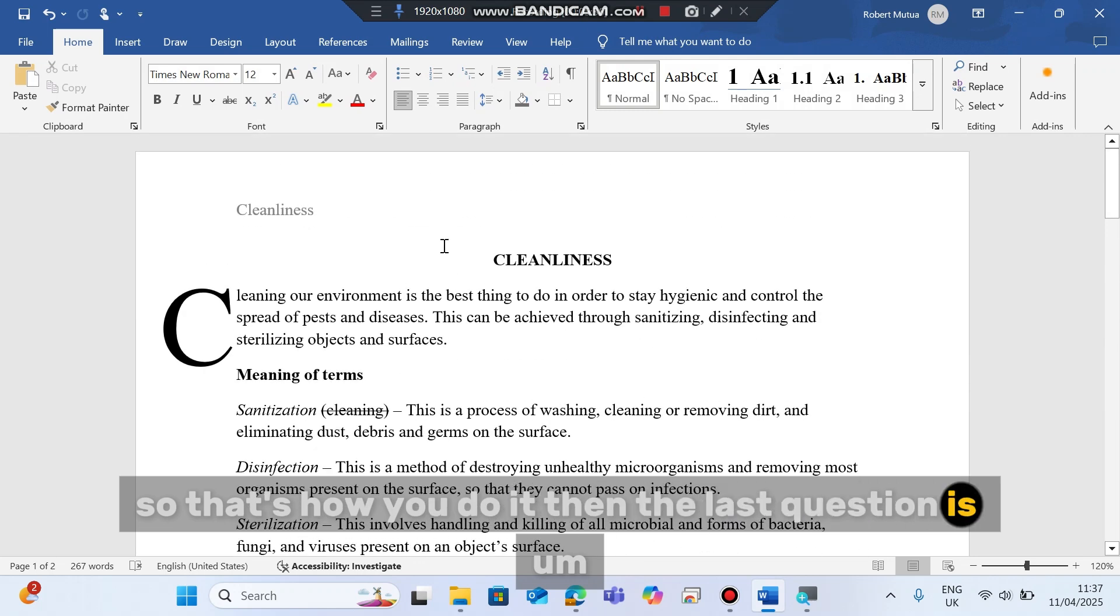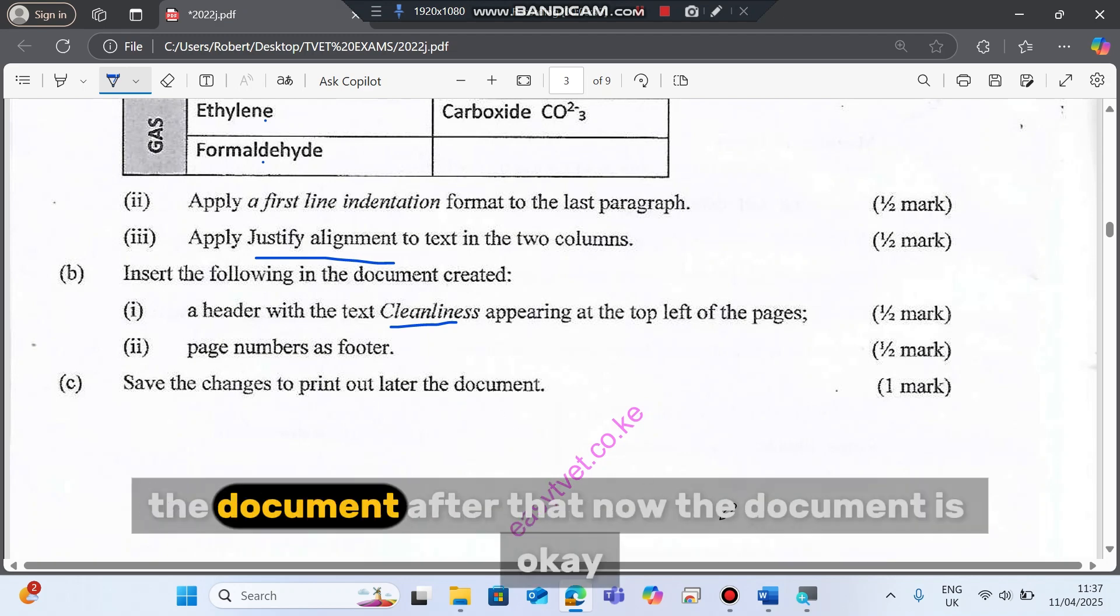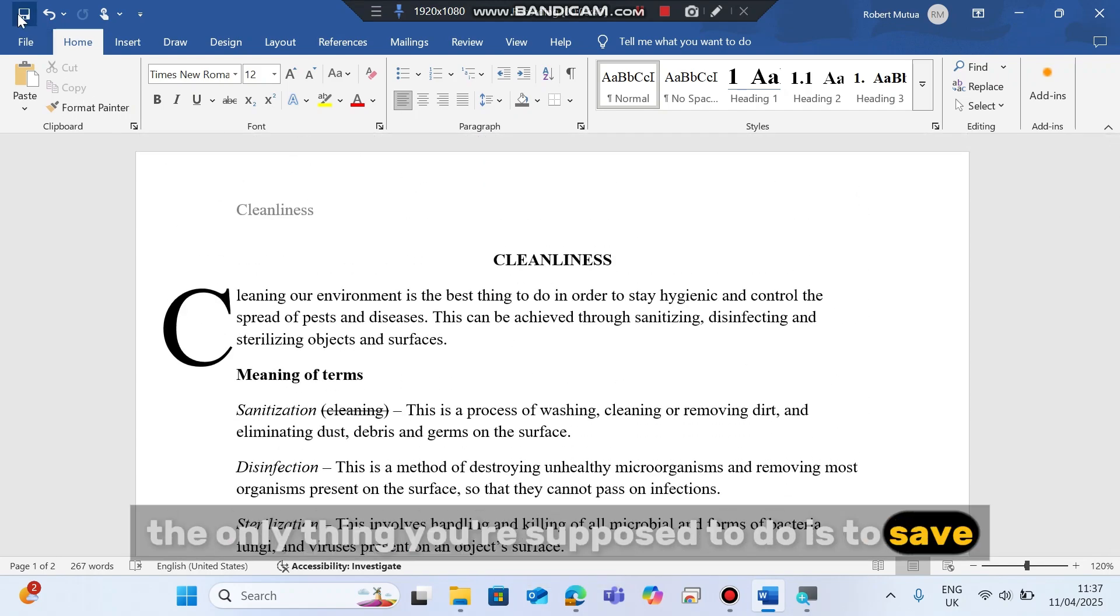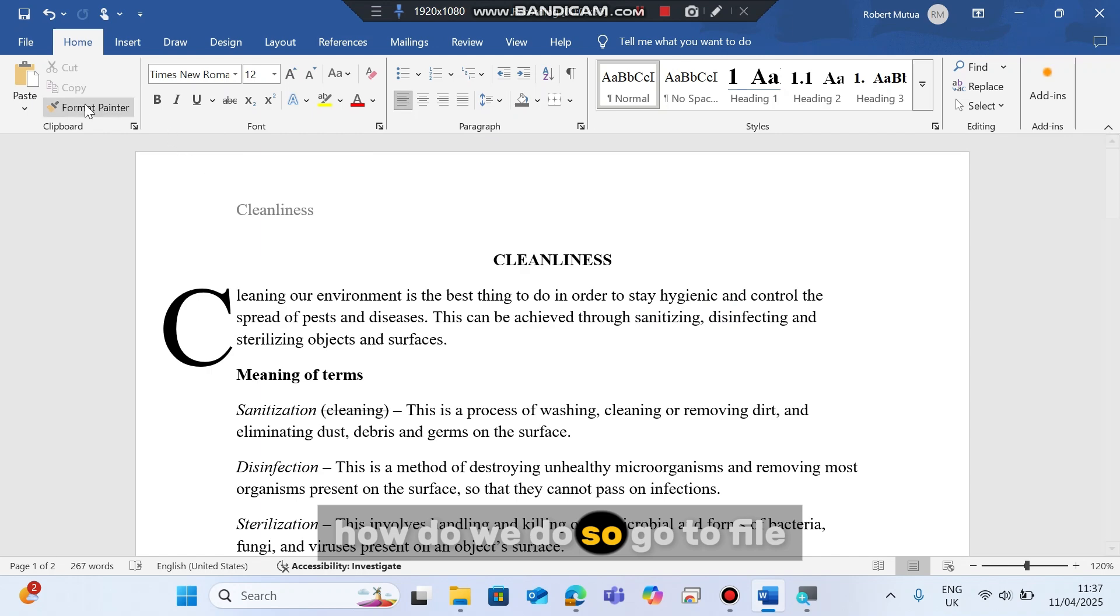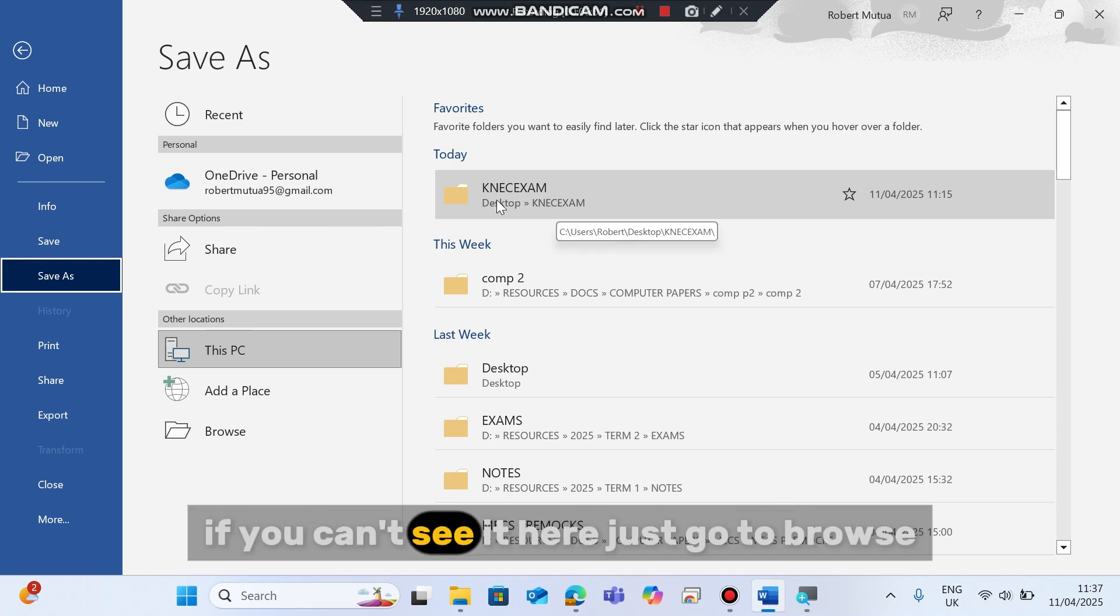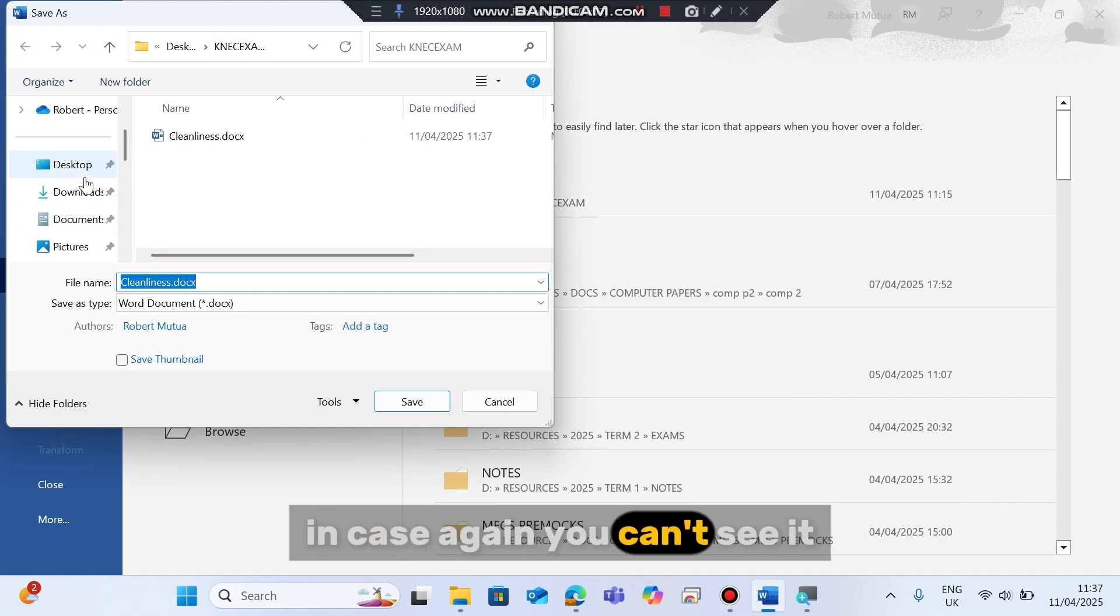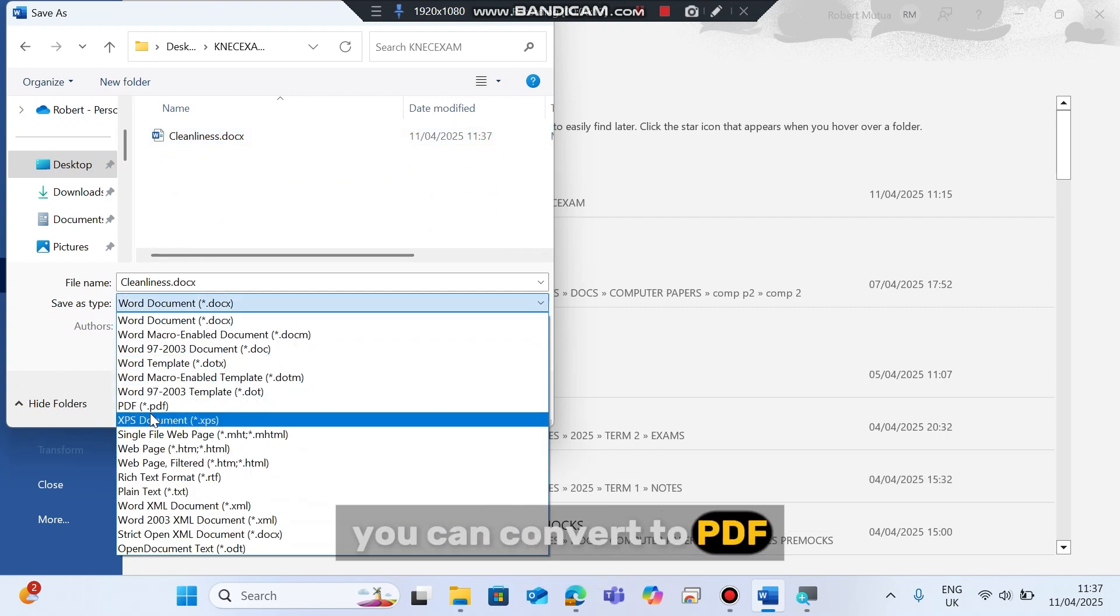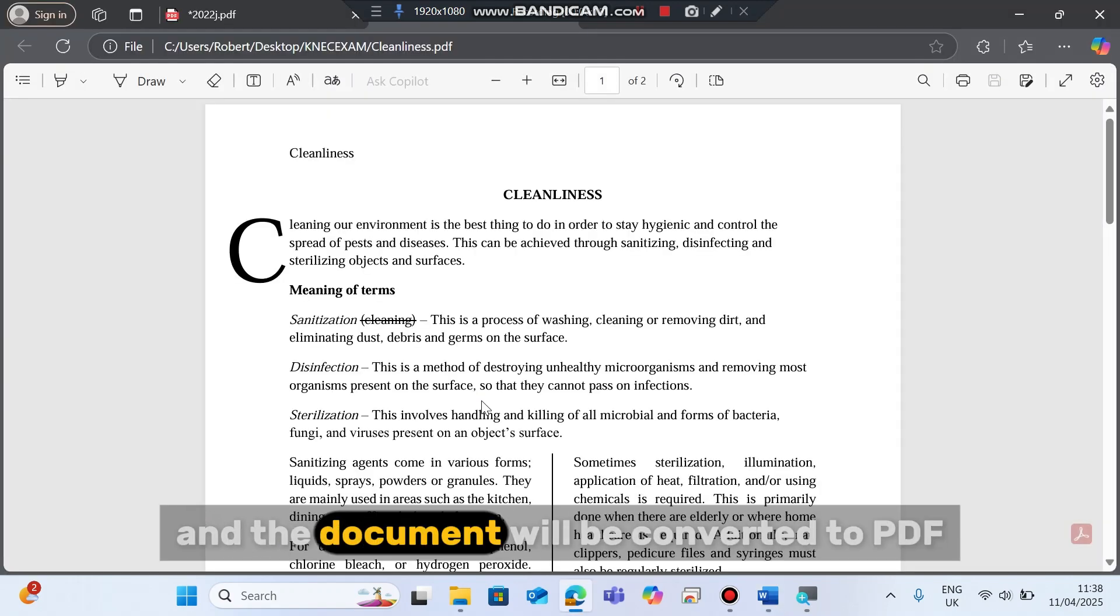Then the last question is save the changes to print out later the document. After that, now the document is okay, it is complete. The only thing you're supposed to do is to save. You can also convert this document to a PDF. How do we do so? Go to file. Go to save as. Select your folder. It is here. If you can't see it here, just go to browse. Then find it. You can find it by default here. In case again you can't see it, go to desktop. Knec exam. And then from save as type, you can convert to PDF. And then you save. And the document will be converted to PDF.